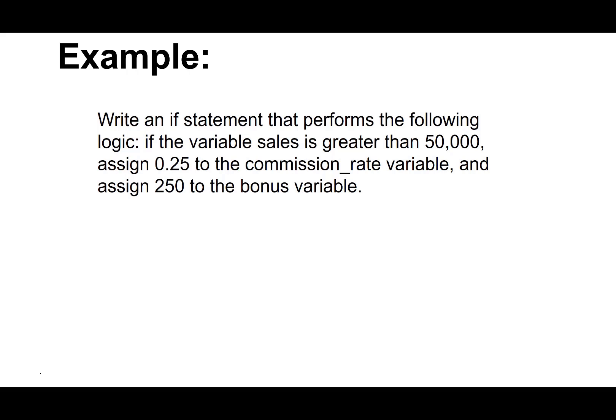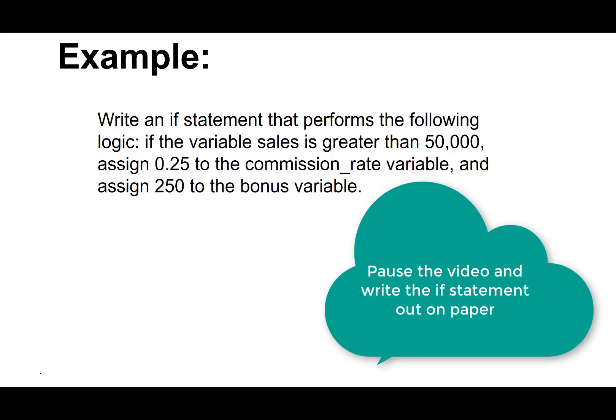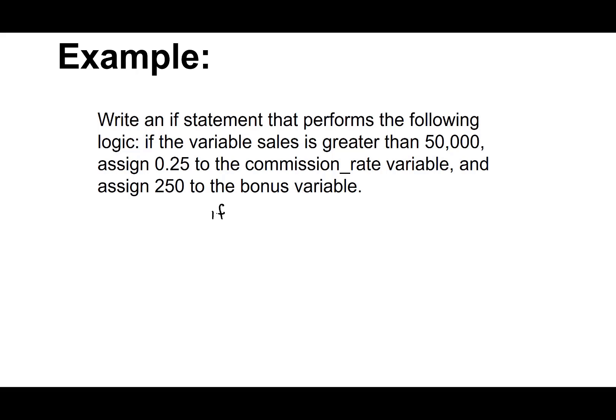Let's do this example. Write an if statement that performs the following logic: if the variable sales is greater than 50,000, assign 0.25 to the commission_rate variable and assign 250 to the bonus variable. Let's do this together now. We know we need if, so we're writing an if statement. Sales greater than 50,000, and then we're going to need some curly braces because we have more than one statement. If sales is greater than 50,000, we want to assign 0.25 to the commission rate, and we want to assign 250 to the bonus variable.